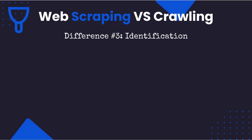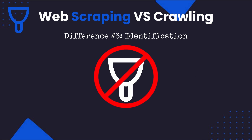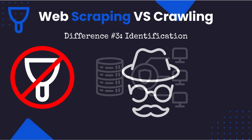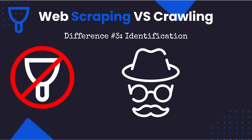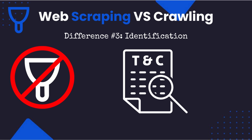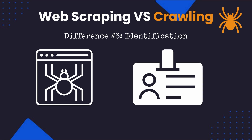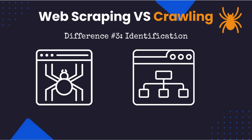Difference number three: how they identify themselves. Typically, websites don't want the data on their website scraped, so web scrapers have to use a number of techniques to hide their real identity. They use proxies to hide their IP addresses, fake user agents and browser fingerprints to look like a real web browser, and they ignore the website's robots.txt file and/or the terms and conditions. In contrast, it is more common for websites to approve of their websites being crawled and indexed, as it often helps their content to be discovered. Web crawlers like search engines clearly identify themselves to websites so they can be allowed to crawl. Websites encourage web crawlers and make it easy for them by providing site maps, etc.